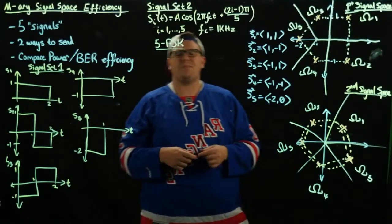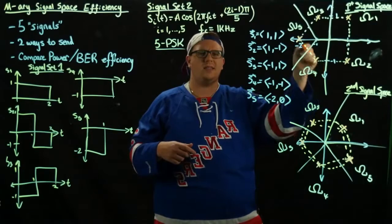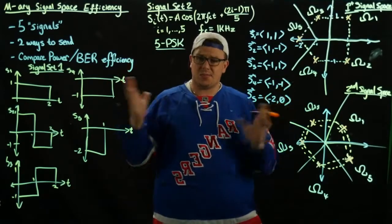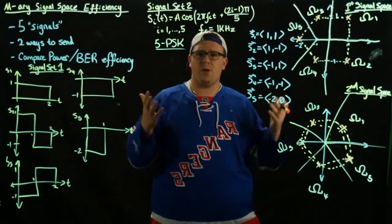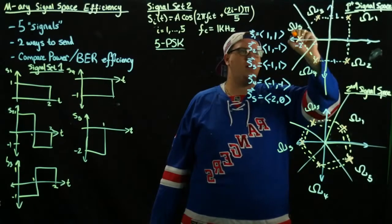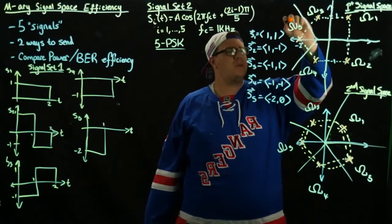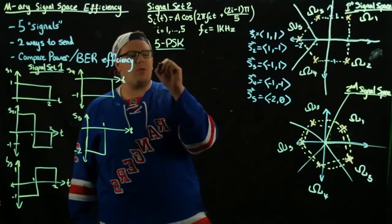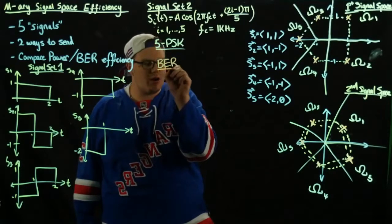Specifically, the error probability is related to the distance between these two signals in the constellation. The smaller the distance, the more likely there's going to be an error, so we look at the worst case. In this case, the worst case is actually a tie between decision region five and three, and five and four.